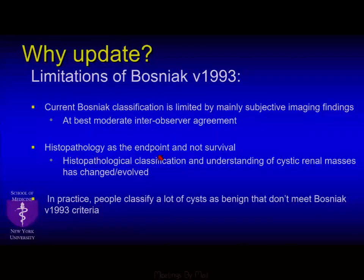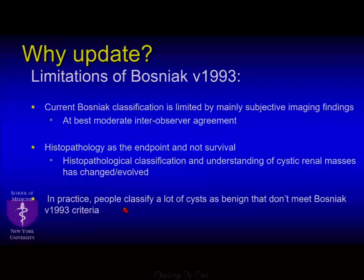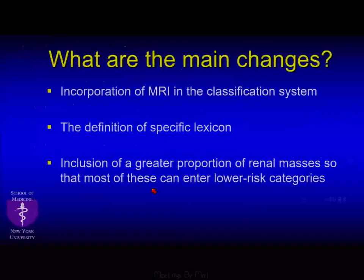Histopathology was the endpoint, not survival. Now, with the new AUA guidelines, they're watching two-centimeter solid renal mass lesions, so we're widening our scope of what we're willing to watch. Are we going to start looking at survival as an outcome? People who've been doing this a long time tend to blow off a lot of renal lesions, and the Bosniak categorization never really helped give justification for doing so — and this new version is trying to do that.